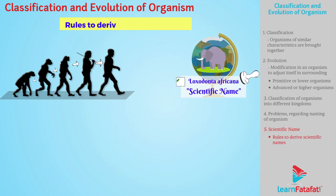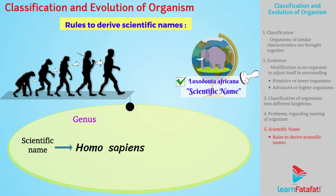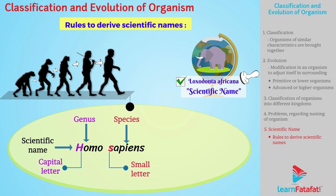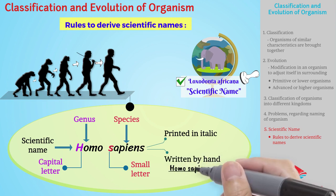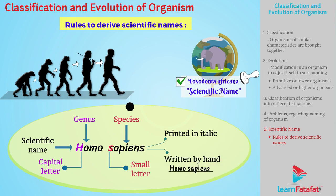Here are the rules to derive scientific names of any organism. Scientific name must have genus and species. Genus must start with a capital letter and species must start with a small letter. Scientific name must be printed in italic and written by hand with an underline below the genus and species.